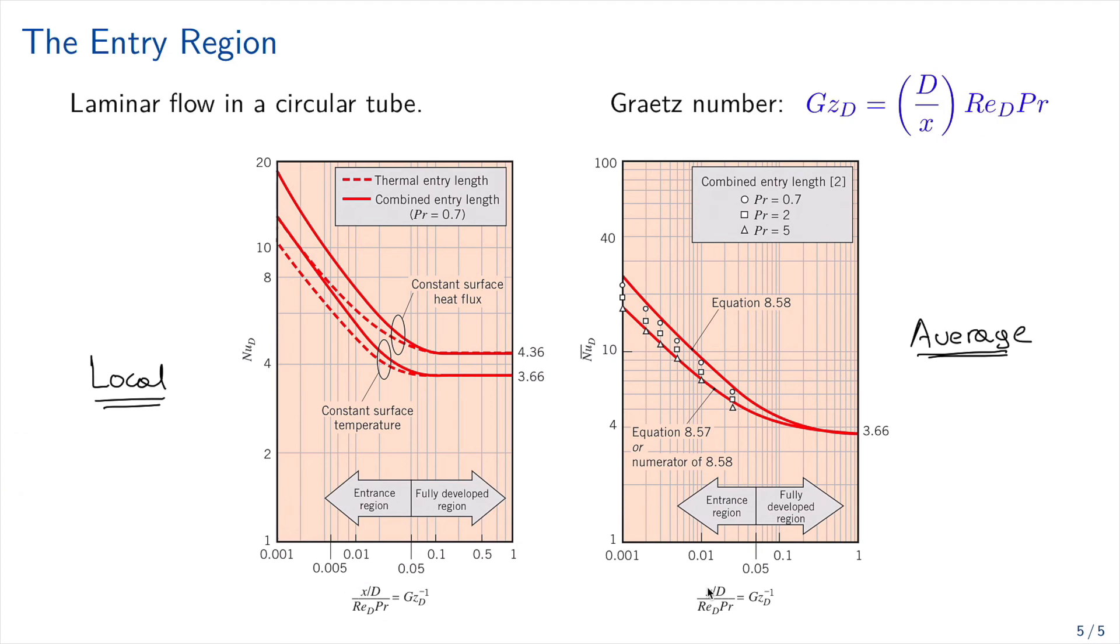So the way of using the graph is we got one Gratz number, and we are going to hit one of these, and then we can compute the Nusselt number. Now we have, in this case, four different lines.